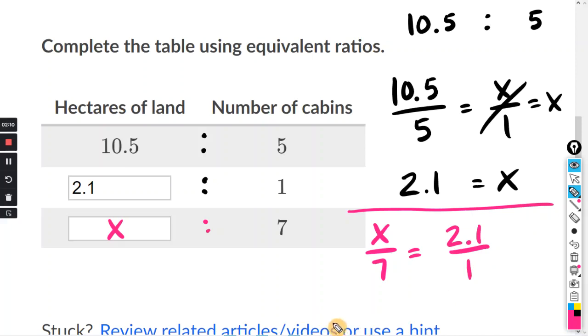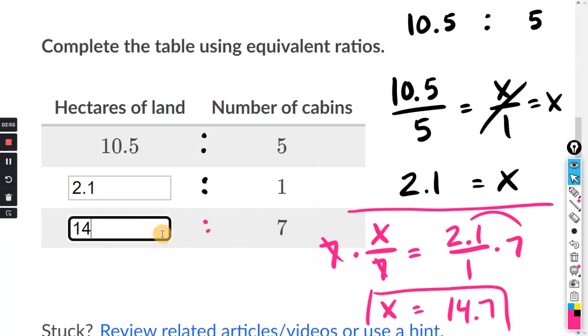We can cross multiply, or we can just multiply both sides by 7. Since we have X divided by 7, the opposite of dividing by 7 is times 7. So I can just do that on both sides. 7 over 7 cancels, and I'll do 2.1 times 7 divided by 1 on the calculator. Actually, I can do it in my head. 2 times 7 is 14, and 0.1 times 7 is 0.7. So that's 2.1 times 7, and that goes in the box right here: 14.7.